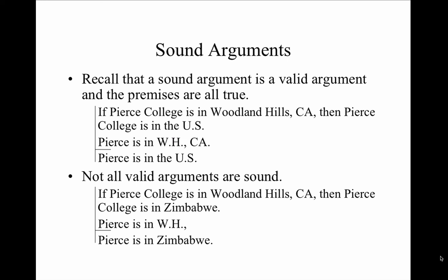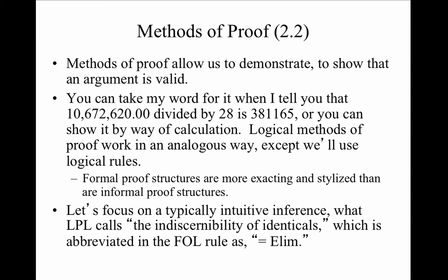Take these two examples. First: 'If Pierce College is in Woodland Hills, California, then Pierce College is in the United States. Pierce College is in Woodland Hills. Therefore, it's in the United States.' This is valid and sound — the same form as the quarters/Ferris wheel argument. Second: 'If Pierce College is in Woodland Hills, California, then Pierce College is in Zimbabwe. Pierce is in Woodland Hills, so it's in Zimbabwe.' The first sentence is false, the conclusion is false — the argument is still valid but not sound, precisely because the first premise is false.